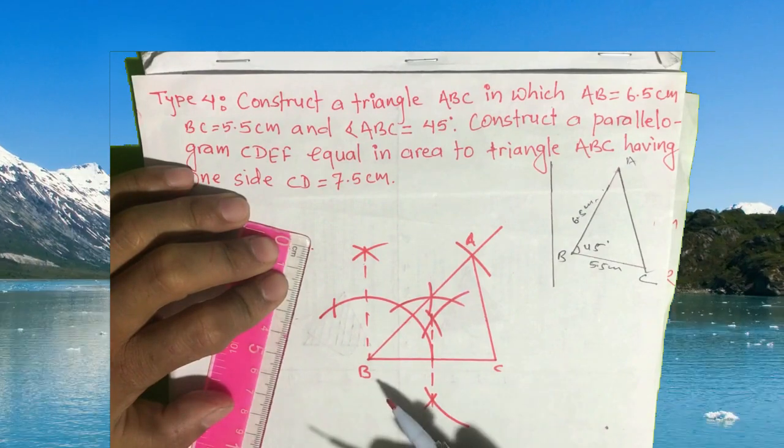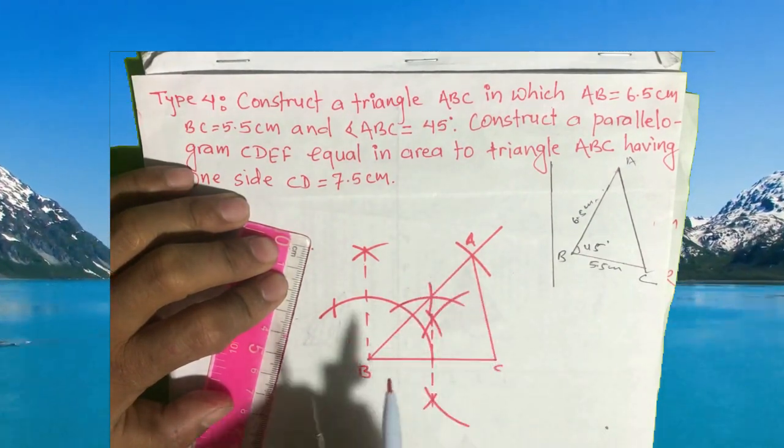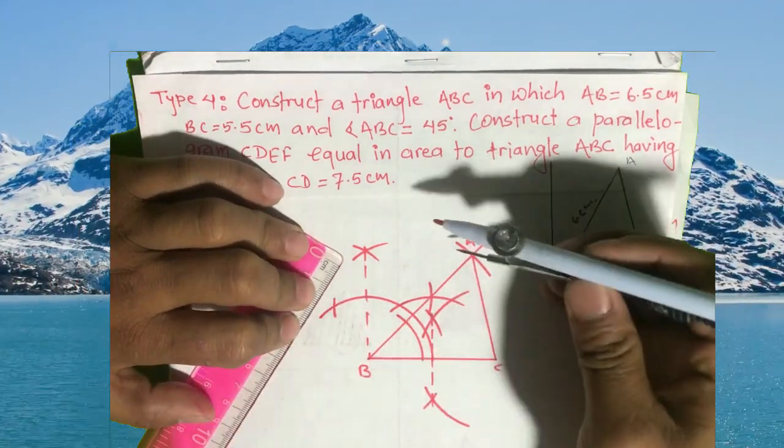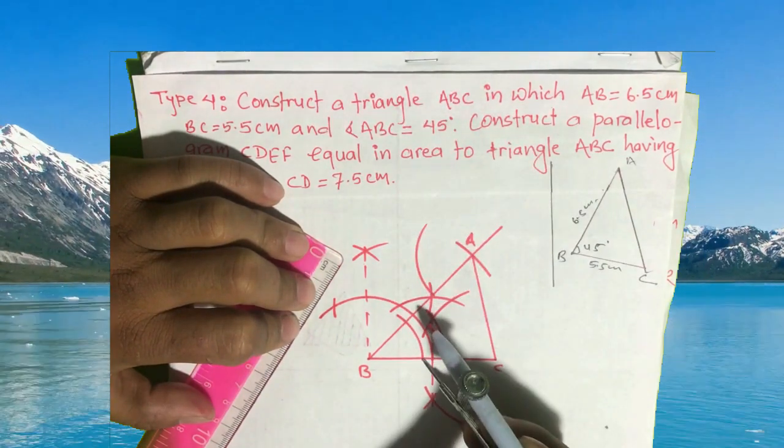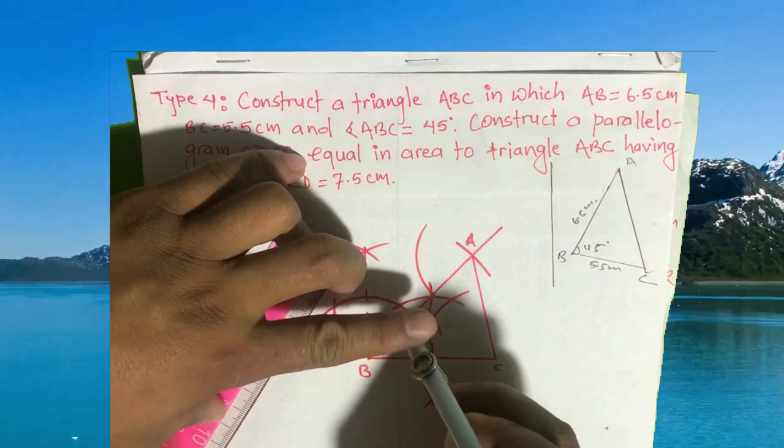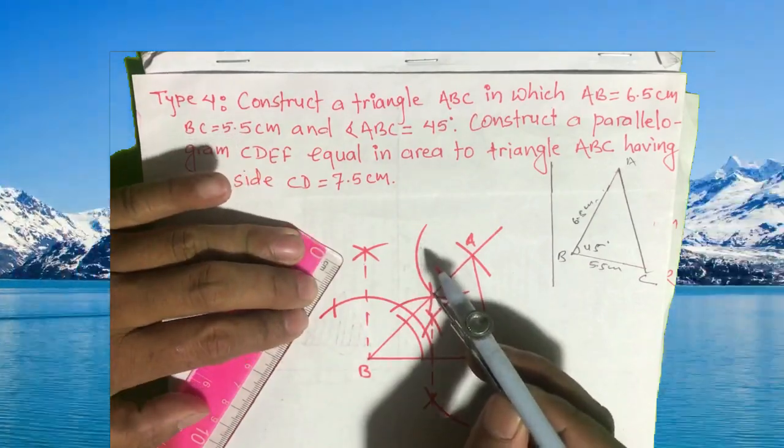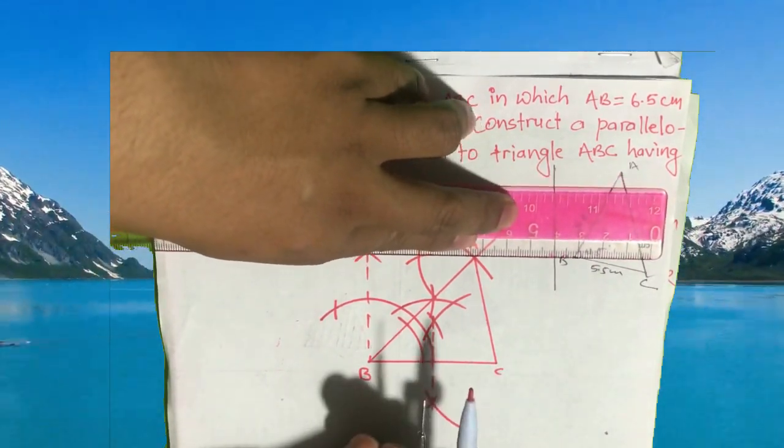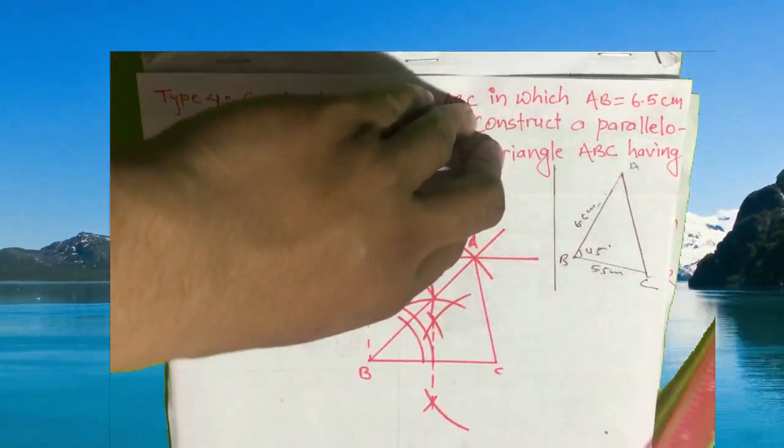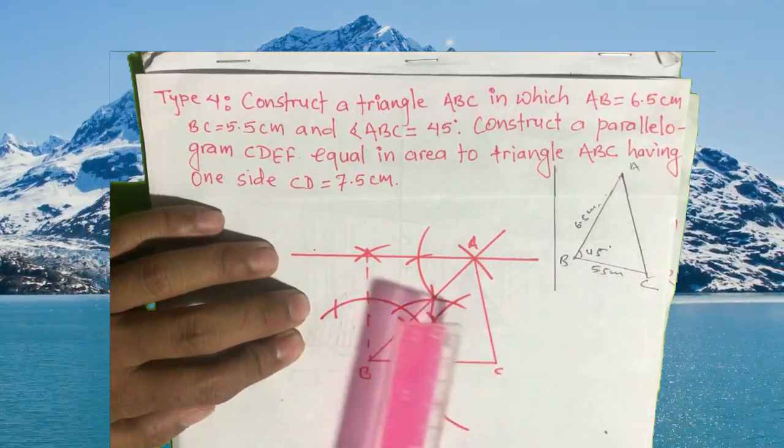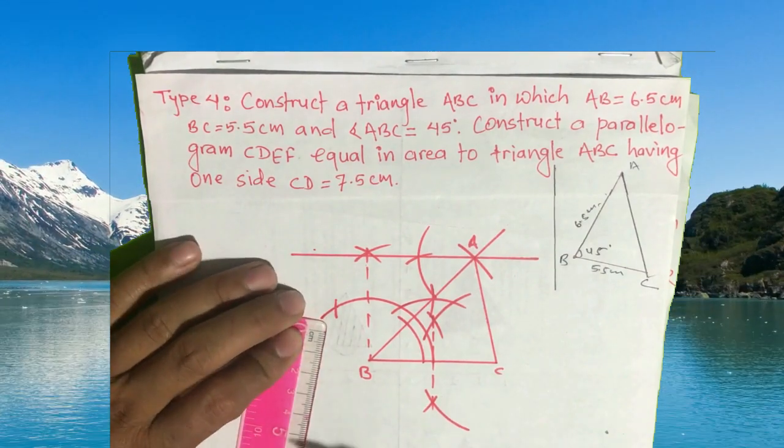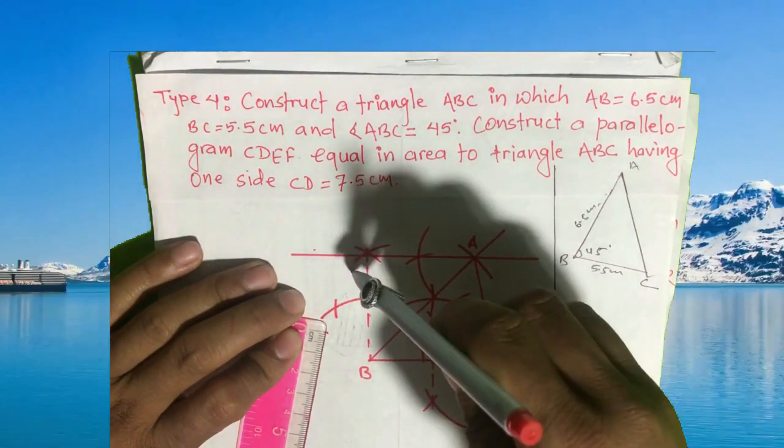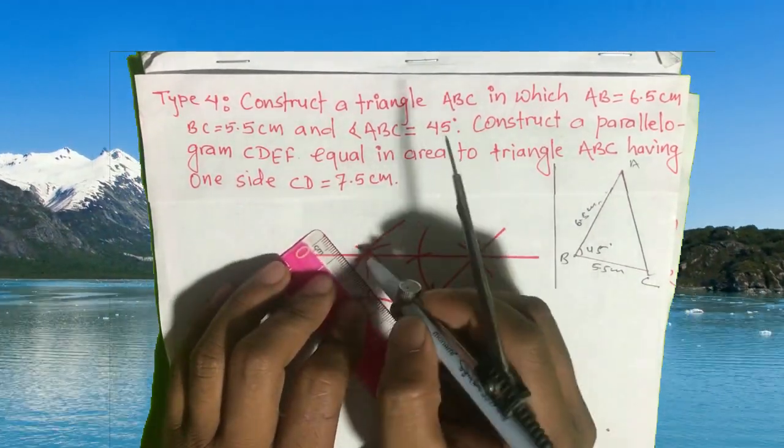We need to draw a line parallel to BC. Using the same arc construction process, make the same arc length to create a parallel line. Then make an arc of 7.5 centimeters from C and cut this straight line. Where it intersects is point D.